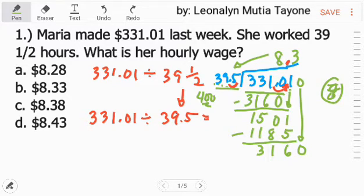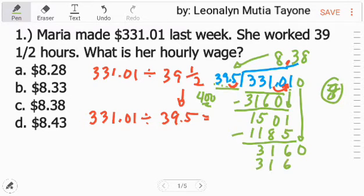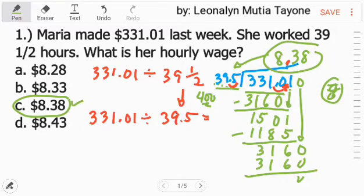3,160 divided by 395. That is exactly 8. 8 times 395 is equals to 3,160. So, the answer here is 8.38 dollars. Let us see.